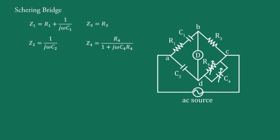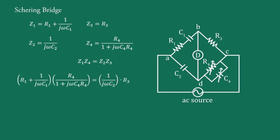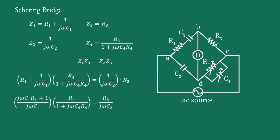Now using the bridge balance condition Z1·Z4 = Z2·Z3, and substituting the values of all the impedances, we can write: (R1 + 1/(jωC1)) · R4/(1 + jωC4·R4) = (1/(jωC2)) · R3. We simplify this expression by multiplying through.